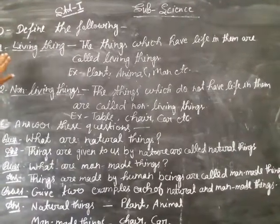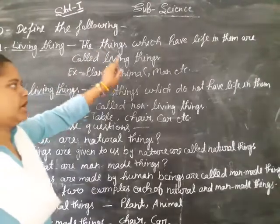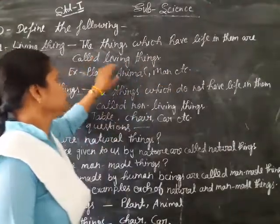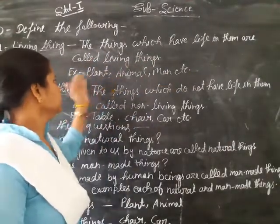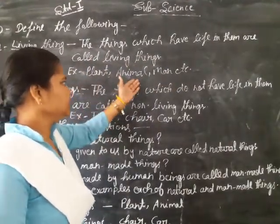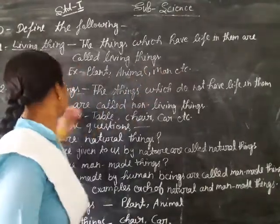Define the following. Living things: the things which have life in them are called living things. For example, plant, animal, man, etc.